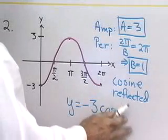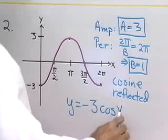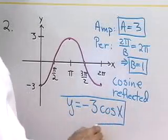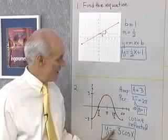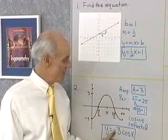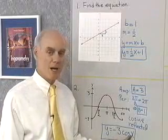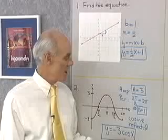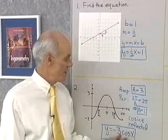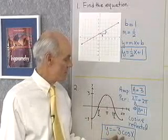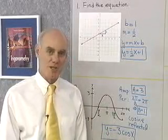cosine of b times x, which is just going to be x. So, here's my negative sign. That reflects the graph. The amplitude is 3, and the period is going to be 2 pi divided by 1, which is just 2 pi, and of course, it's a cosine curve. So, this graph right here comes from this equation, y equals negative 3 cosine x.